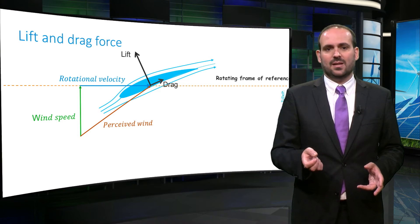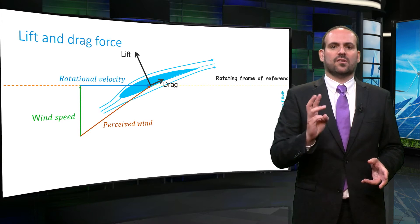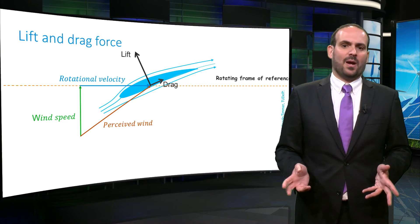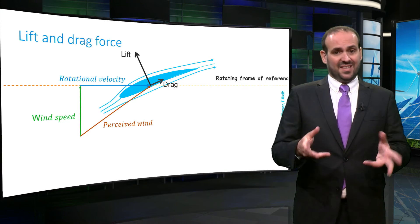In a wind turbine, the blade section will experience two sources of wind. First, the natural wind flowing through the turbine, which we also experience. Second, an apparent wind from the flight path of the blade, due to its rotation.